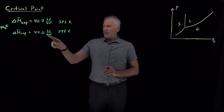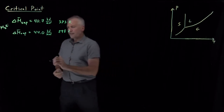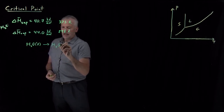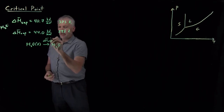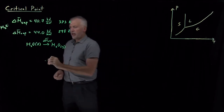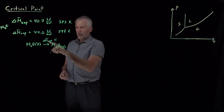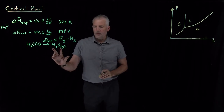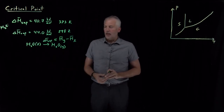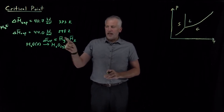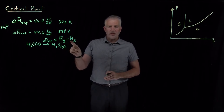The enthalpy of vaporization is the enthalpy for converting liquid into gas. It equals the enthalpy of gaseous water minus the enthalpy of liquid water. It's not surprising that this difference changes with temperature, because the enthalpy of both the gas and the liquid each change with temperature — that's what the heat capacity tells us.